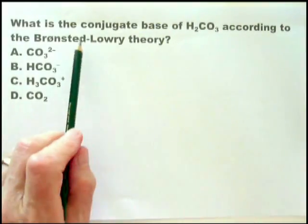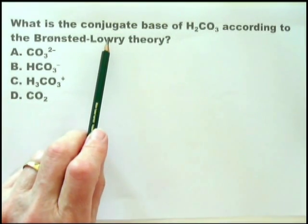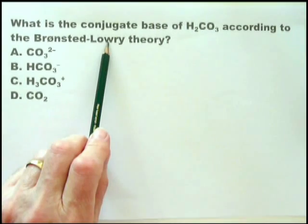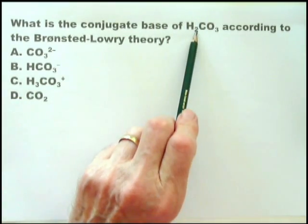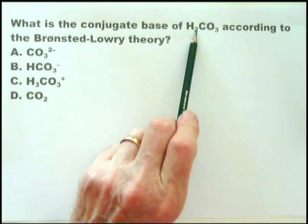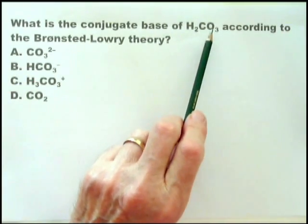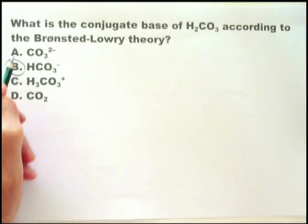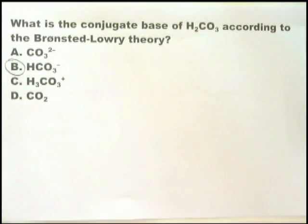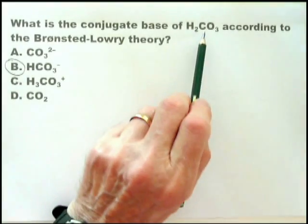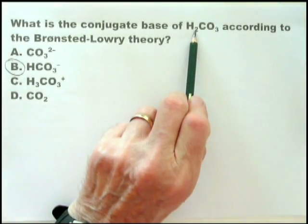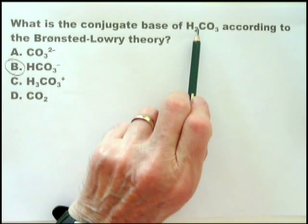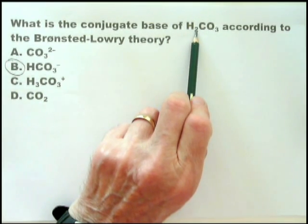The acid in the Bronsted-Lowry theory is a hydrogen donor. Therefore, when this donates a hydrogen ion, the result would be HCO3 minus. That's the only one that fits. Any acid in the Bronsted-Lowry theory will donate a hydrogen ion, and therefore what is left is the conjugate base.